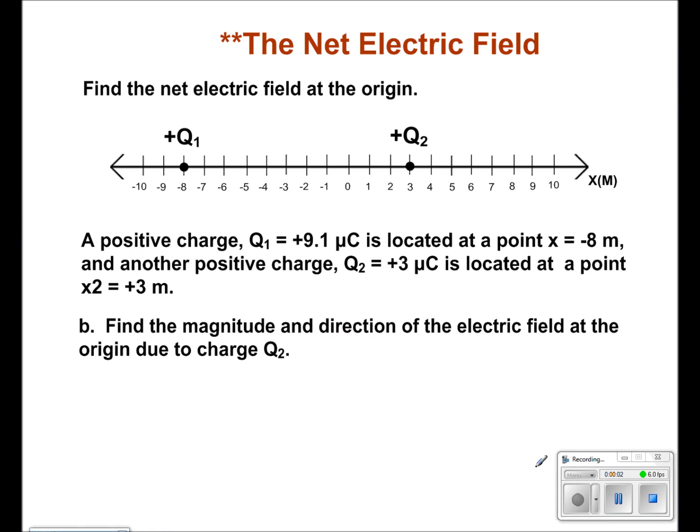For part B, we want to find the second electric field, E2. This is caused by our charge Q2, which has a magnitude of 3 micro coulombs. This can be rewritten as 3 times 10 to the negative 6 coulombs.